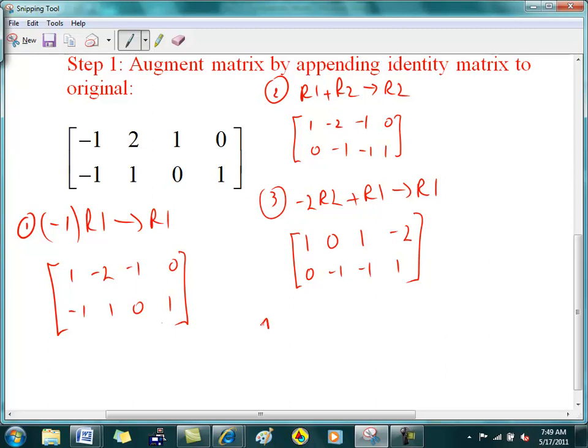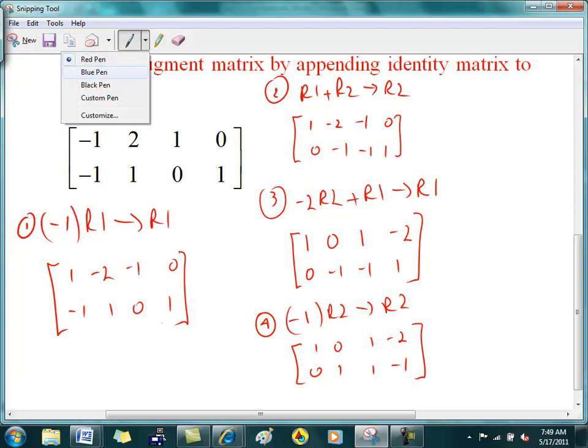You with me on that? What do you think the next step should be? Nice, good job. Negative one times R2 into R2, and that gives me one, zero, one, negative two, zero, one, one, negative one. And my claim is that this is the inverse.